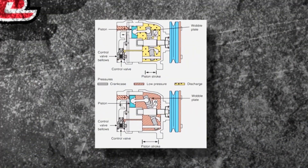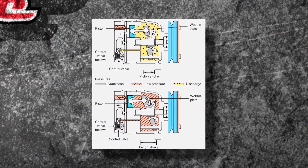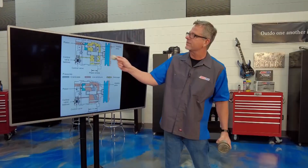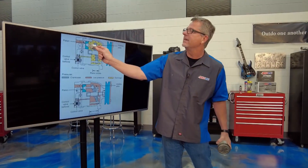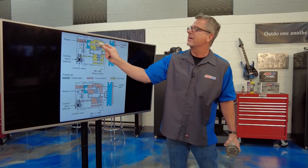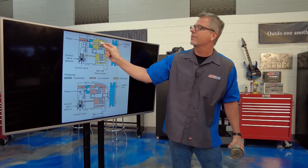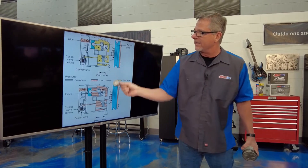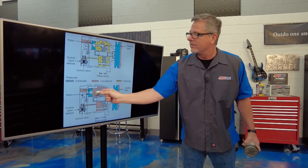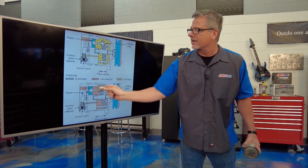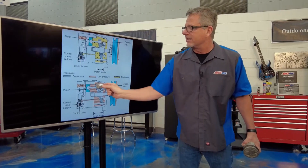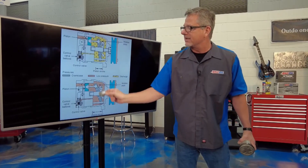My favorite though is the wobble plate compressor. This is really cool. The wobble plate compressor has the piston right here, and we make a short stroke if cooling demands are low and we don't need it very cold. And then the stroke is going to get much bigger when we need the cooling — and lubrication is key there as well.